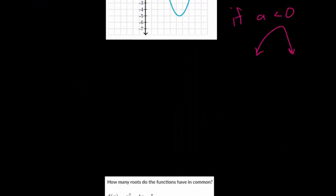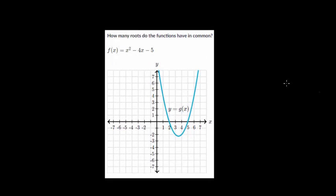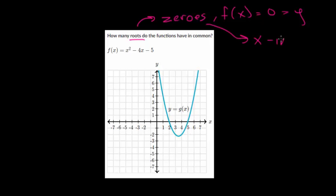So let's keep going. How many roots do the functions have in common? So what are the roots? Well, the other word for these are zeros. Or essentially this is when the function is equal to zero. Or the y value is zero. So these are another word for them. These are just the x-intercepts. So if you ever hear the roots, the zeros, all they're talking about is the x-intercepts. Or when the y value is zero.